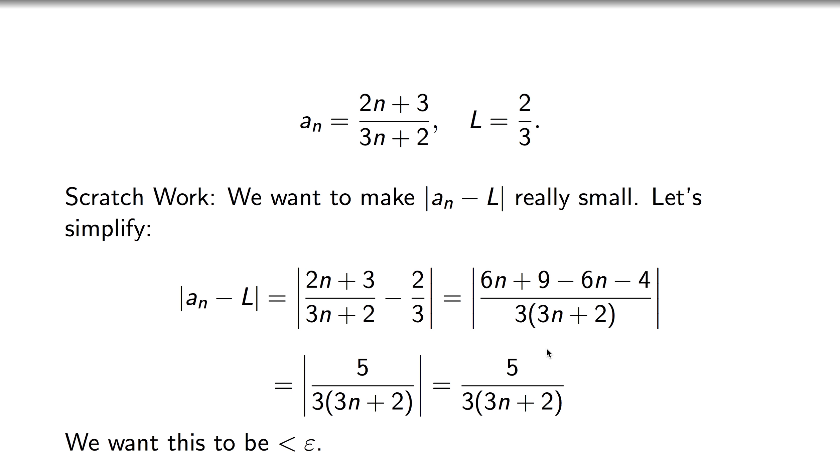Our scratch work idea is that we want this quantity a_n minus L to be really small. We've already done this computation in another video, but we do the simplification. We work out what the difference is between the a_n and the limit, and in the end, after we get rid of the absolute value signs, we see that it's 5 over this quantity down here.